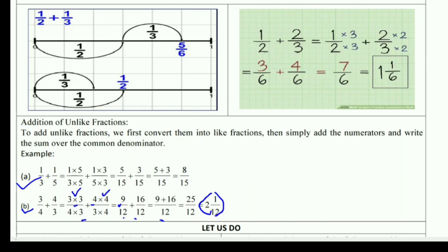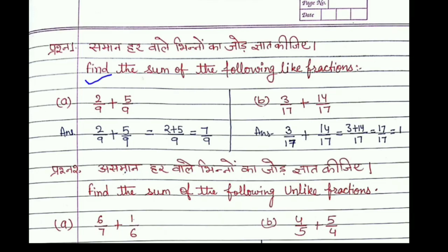Now let's do some exercise questions. Take out your math notebook. The first question is: find the sum of the following like fractions, meaning same denominator. That's very easy, a two-step question. First write the question: 2/9 plus 5/9. Second step: write denominator as 9 and add the numerators: 2 plus 5 equals 7. Answer is 7/9. Then 3/17 plus 14/17. Simple: write the question, take the common denominator 17, add the numerators: 3 plus 14 equals 17. 17/17 equals 1. Remember, when numerator and denominator are the same, the answer is always one.